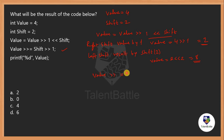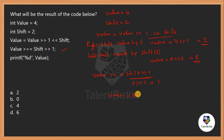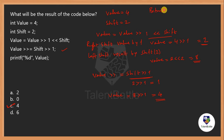Next statement: shift right-shifts by 1, so shift = 2 >> 1 = 1. Then value = 8 >> 1 = 4. We then print the variable value, so the final output is 4. Option C is correct. You need to focus on bitwise operators, particularly left shift and right shift operators, for this question.